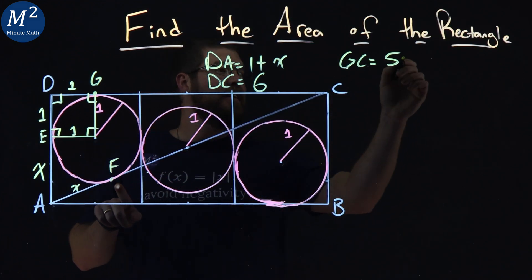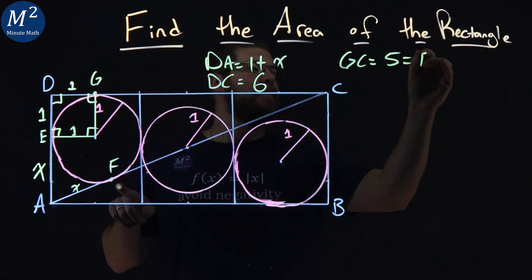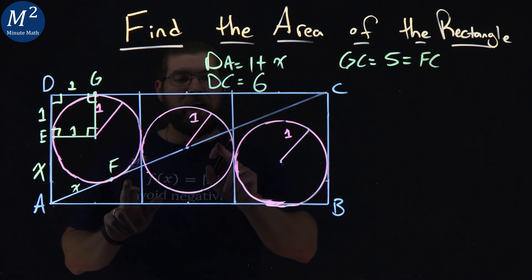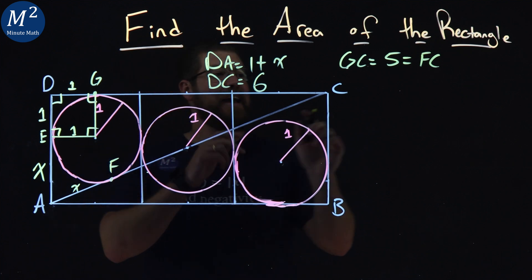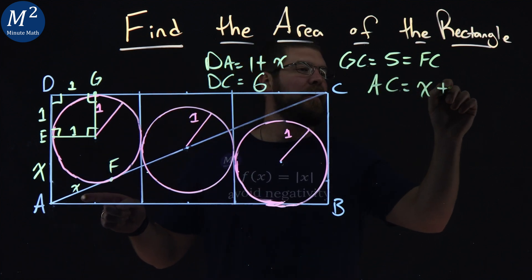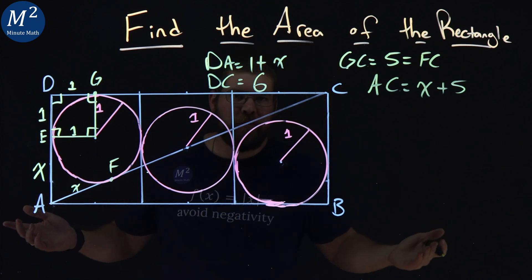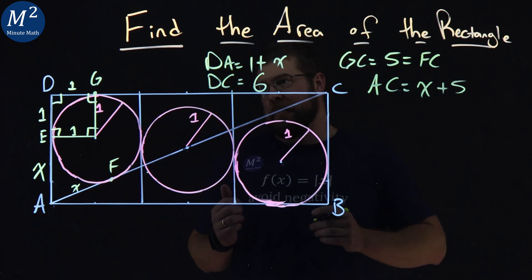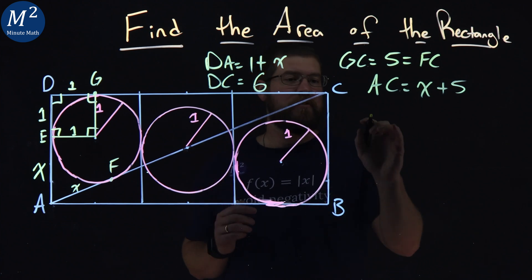Well, that means FC has the same length as GC, meaning it has length of 5. And so AC is that X plus 5. And now we can use good old Pythagorean theorem, everyone's favorite little theorem right here.